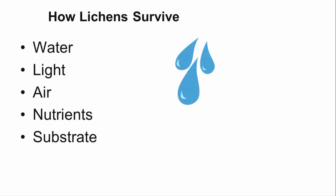Lichens are not capable of conserving water during dry periods, so they become dormant during periods of dry weather. When they get wet again, either from rain or heavy fog, they start to grow again.